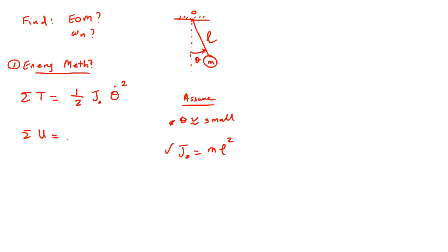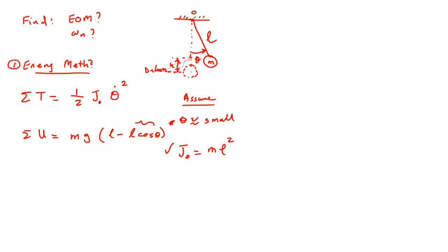For the potential energy, it comes from the weight of the mass. Remember, we do not have an equilibrium position here, so the weight is important — it's what moves the mass. Let this be the datum line. The height h from the datum to the mass is l minus l cosine theta, since the vertical projection of the rod is l cosine theta. So the total potential energy is mgl minus l cosine theta, which simplifies to mg times (l minus l cosine theta).